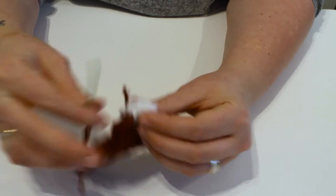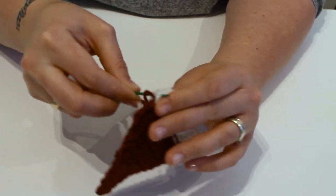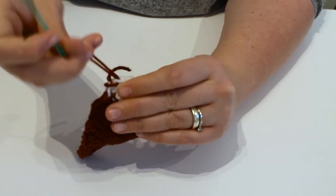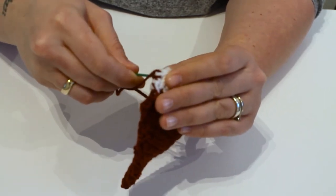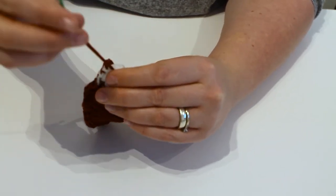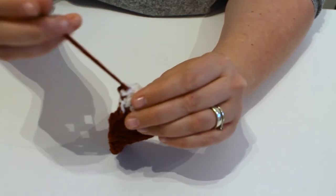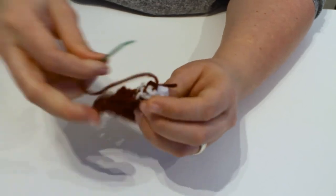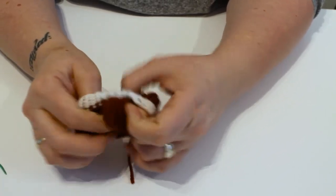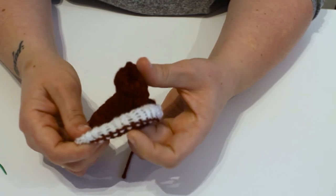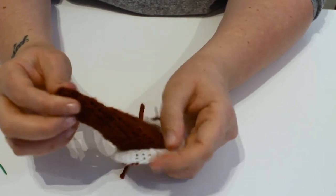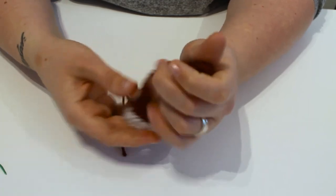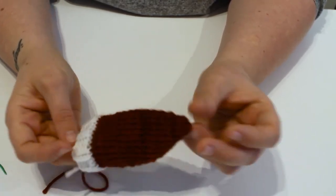At this point, you could use a white yarn. If you leave a longer tail from earlier, from the changeover, you can use that. Tie that off. Weave in the ends, as ever. And then we have a little Santa hat.